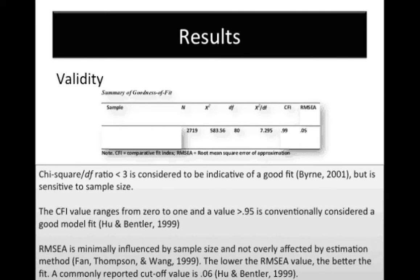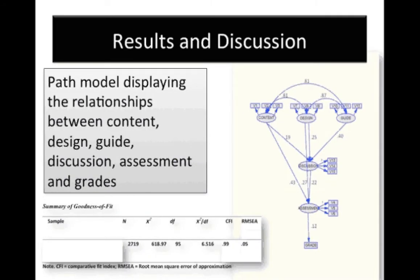The chi-square by DF ratio can be explained by the large sample size; when tested with a smaller sample size the value does come down. All factor loadings range from 0.87 to 0.96, indicating that the measures were significant in measuring the underlying latent factor. The path model analysis displays the relationship between content, design, guide, discussion, assessment, and grades. The fit indices again show a reasonable fit.